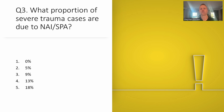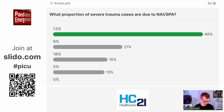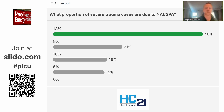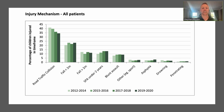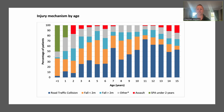Question three: what proportion of severe trauma cases are the result of non-accidental injury or suspected physical abuse? The correct answer is 13%. Looking at the TARN bar chart for suspected physical abuse under two years of age, it sits at 13% of all trauma data recorded in the UK and Ireland. Looking at this graphically by age, for those under one year old, half of all cases have been injured by a caregiver or parent, dropping to 25% between ages one and two — which is still a massive number.